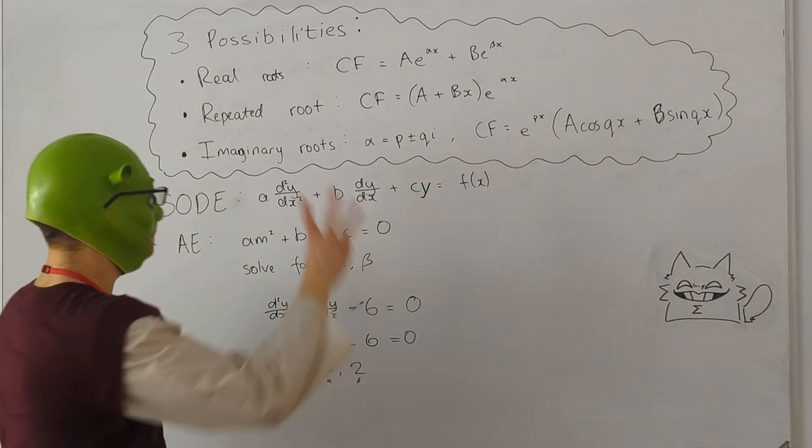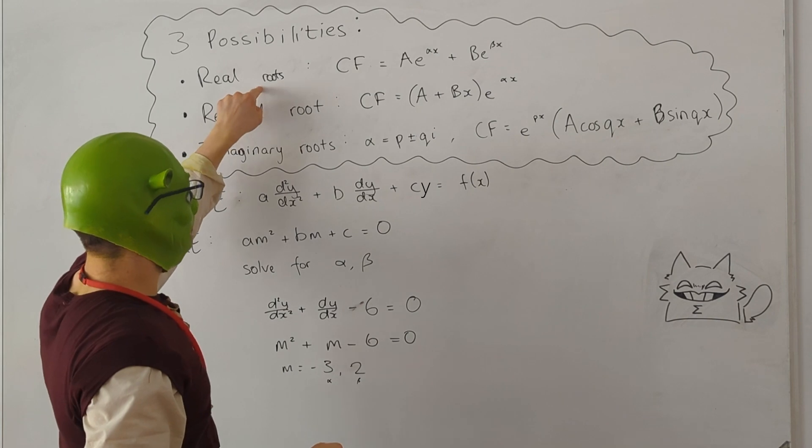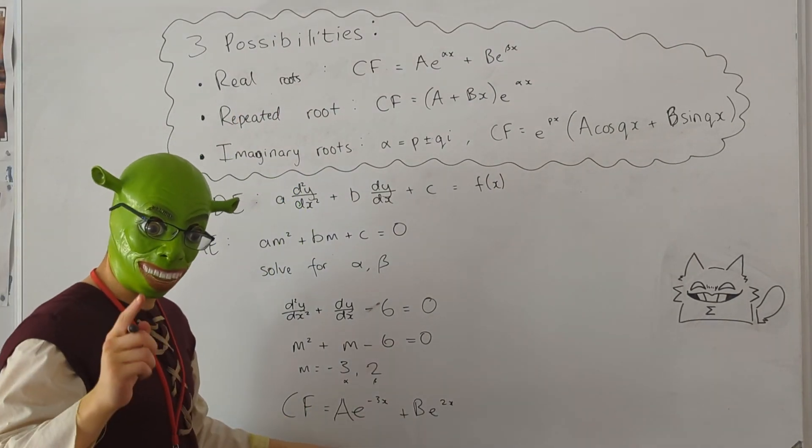Now there are three different possibilities that you have to take into account. If you get alpha and beta as real roots, then our complementary function, so that is our complementary function.